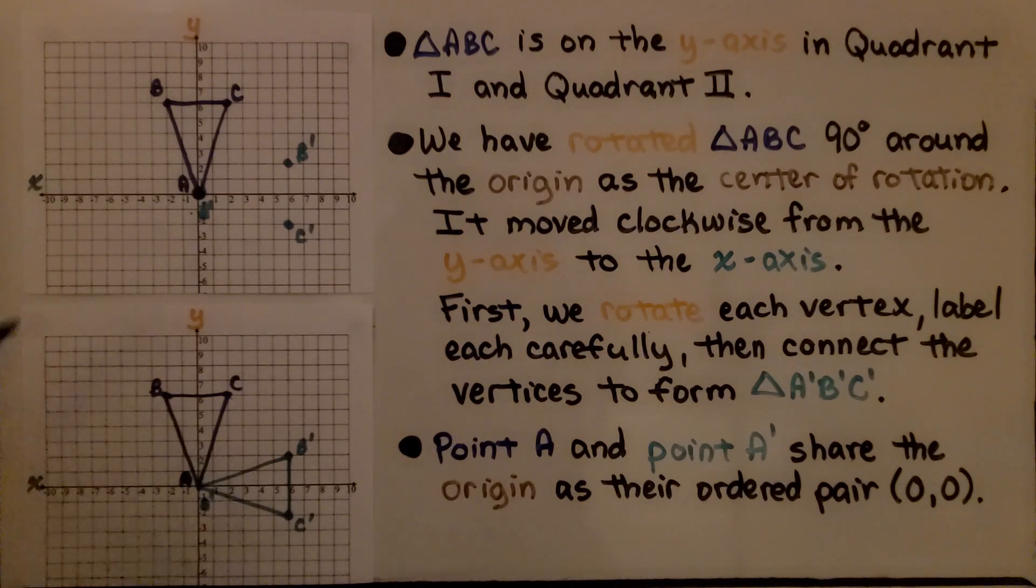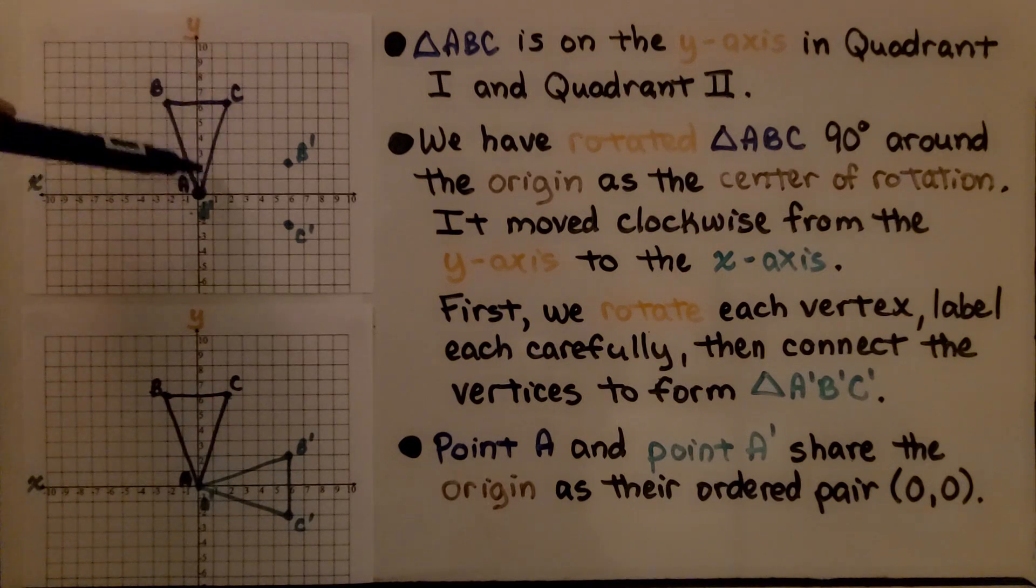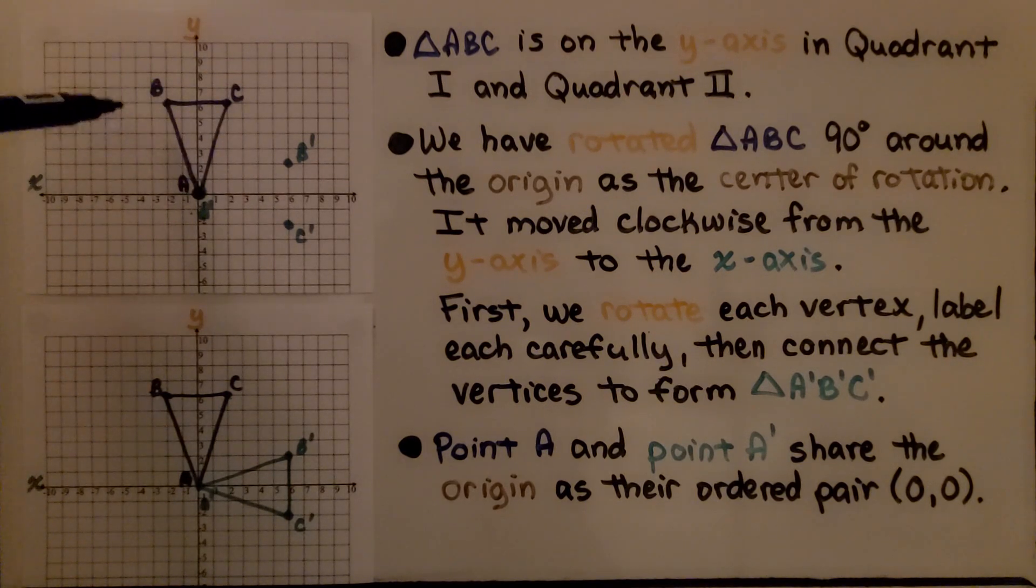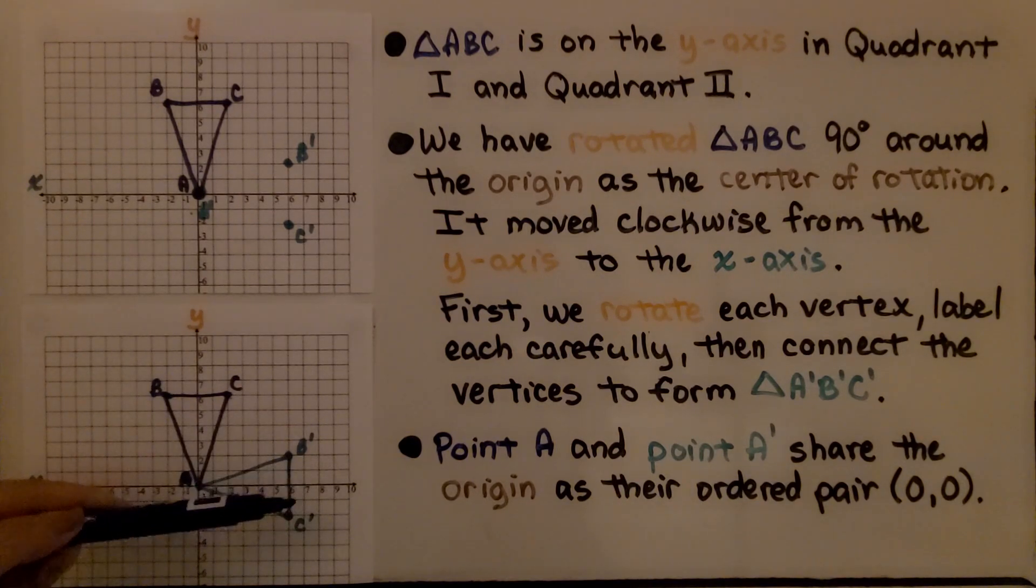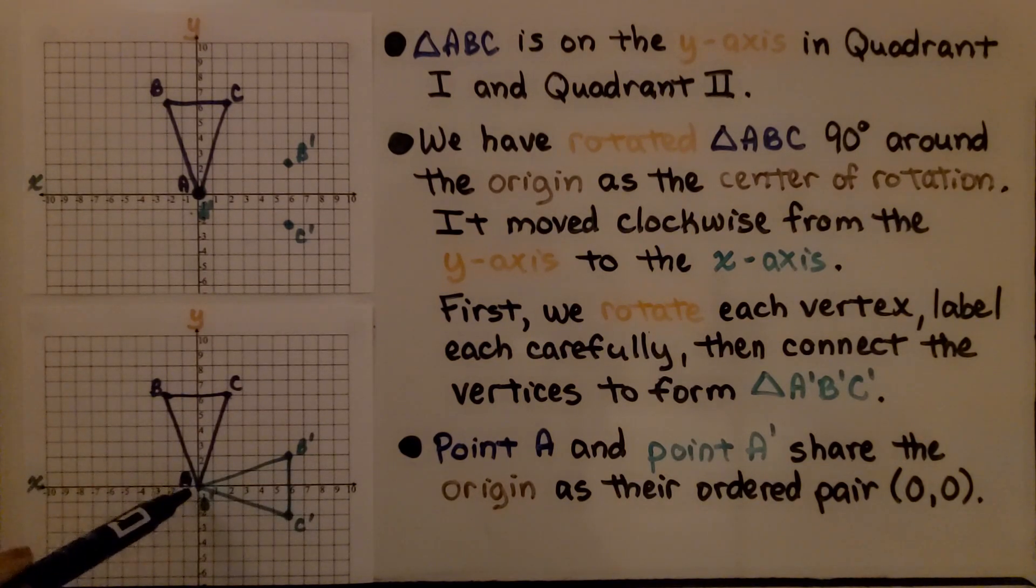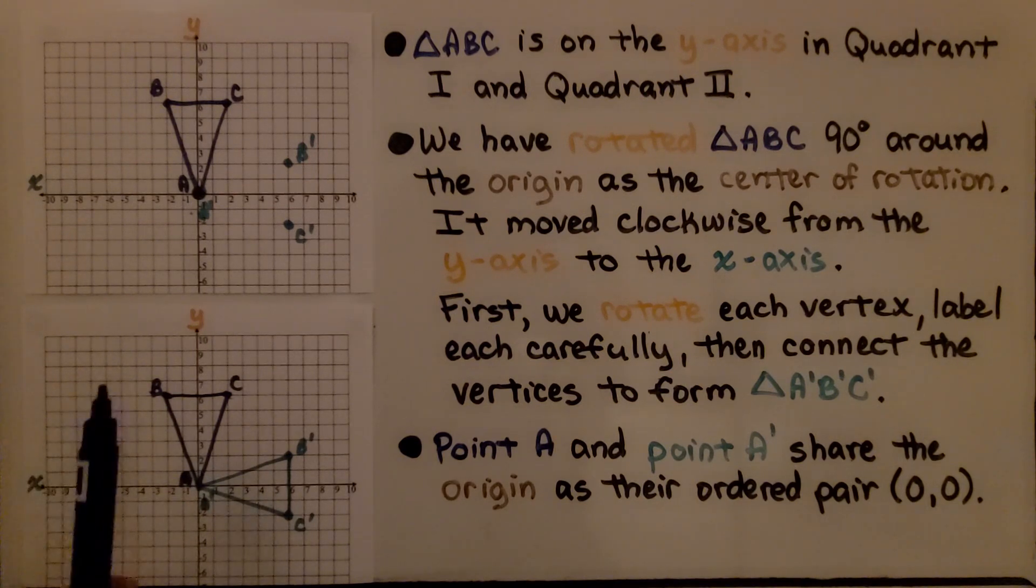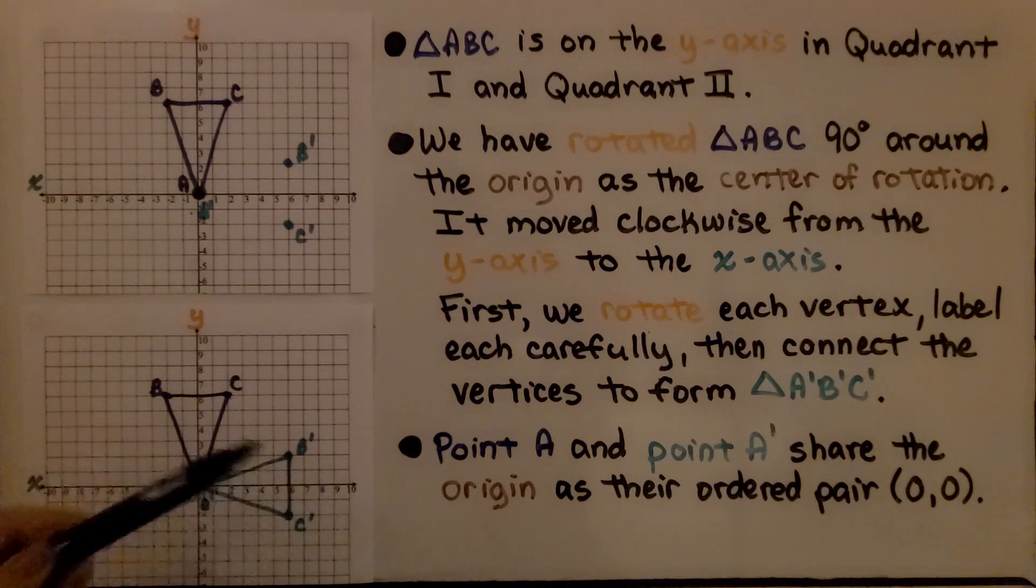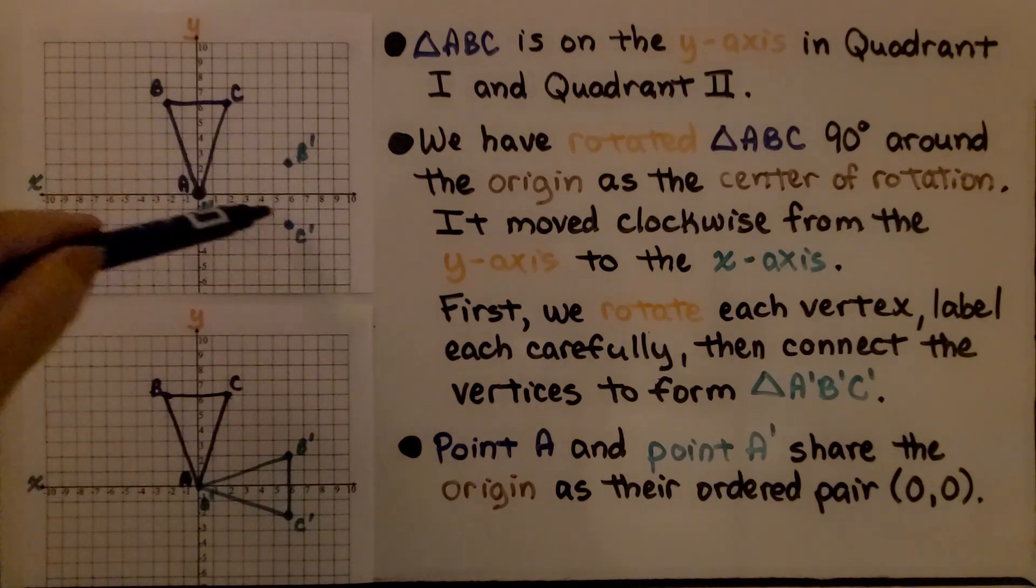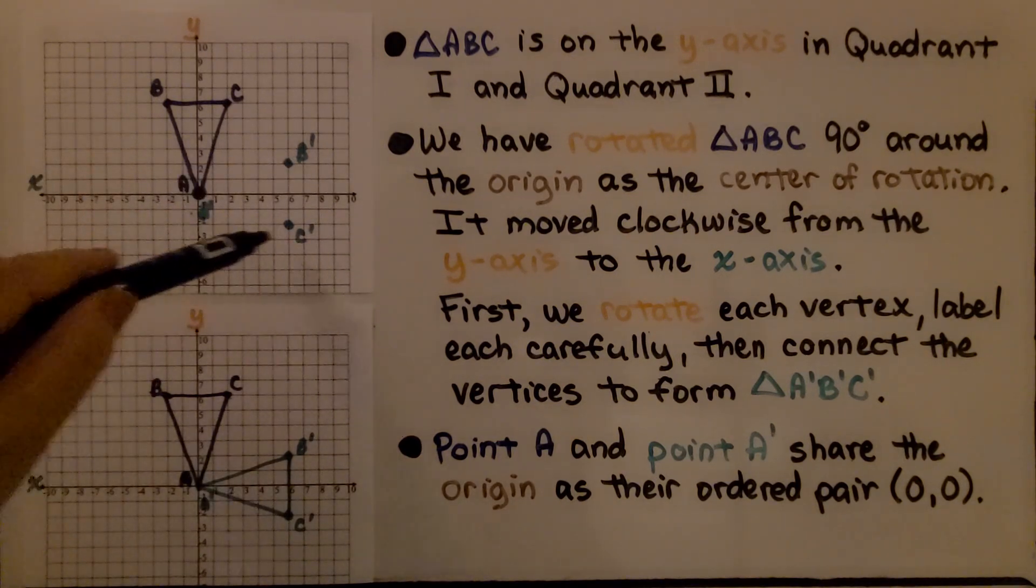Triangle ABC is on the y-axis in Quadrant 1 and Quadrant 2. We have rotated triangle ABC 90 degrees around the origin as the center of rotation. It moved clockwise from the y-axis to the x-axis. First, we rotate each vertex, label each carefully.